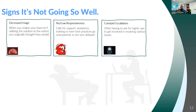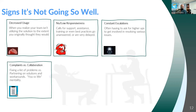Constant escalation — we talked about technical challenges before. If those technical issues are ongoing and not getting resolved, you often have to try to escalate. We've worked with support, but now we want to talk to a support manager or a VP because we're still not getting the results we expected as a result of all these technical challenges.